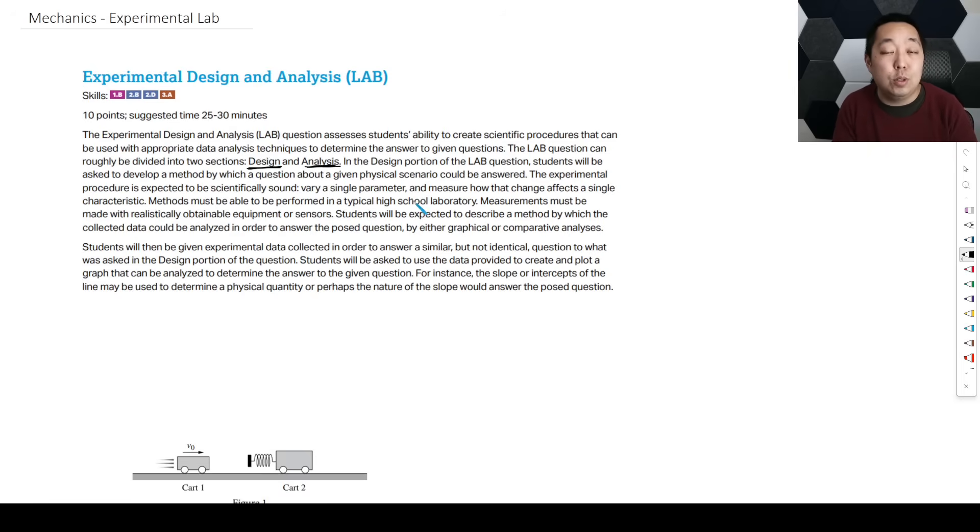In the experiment design, they'll give you a scenario and equipment you're allowed to use. You want to vary a single parameter and measure how that change affects it. You're expected to describe a method to collect data that could be analyzed, very commonly by using a line of best fit, but that's not exclusively. It could be graphical or some kind of comparison or calculation in the analysis.